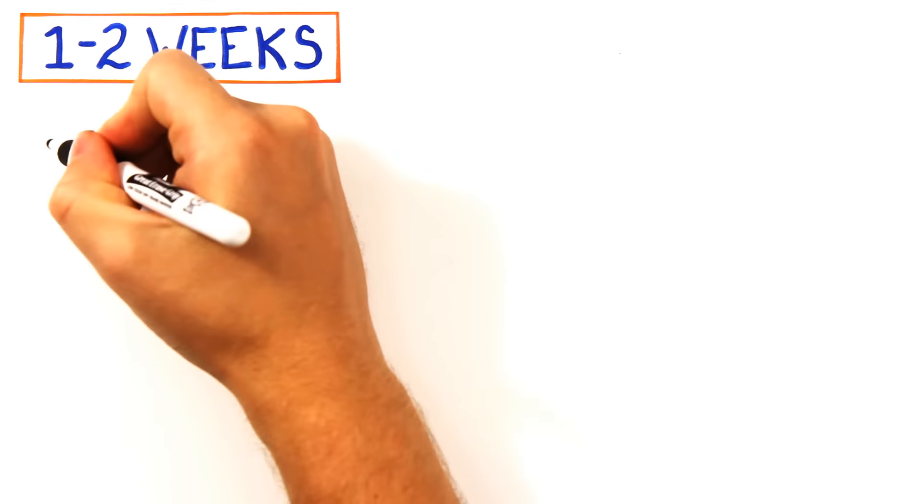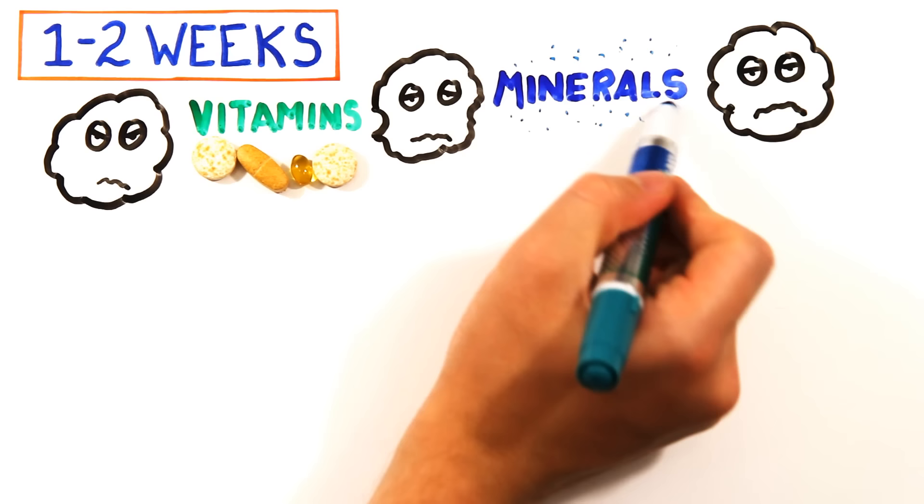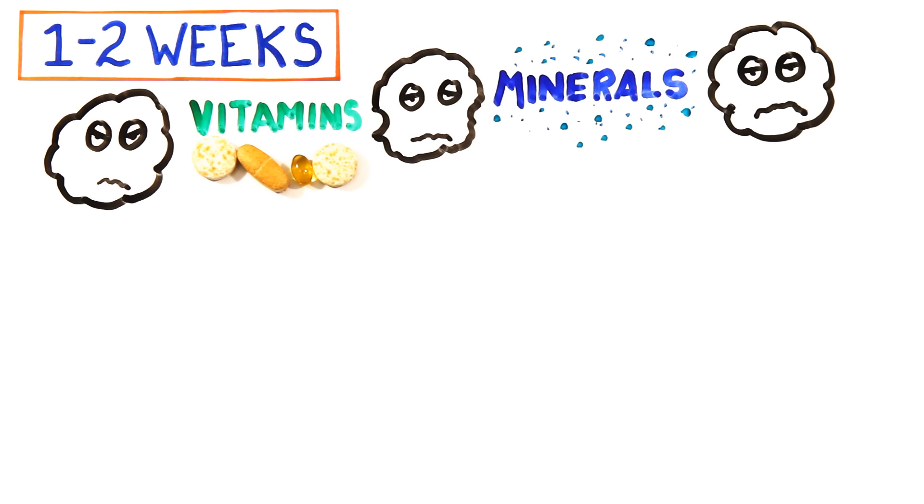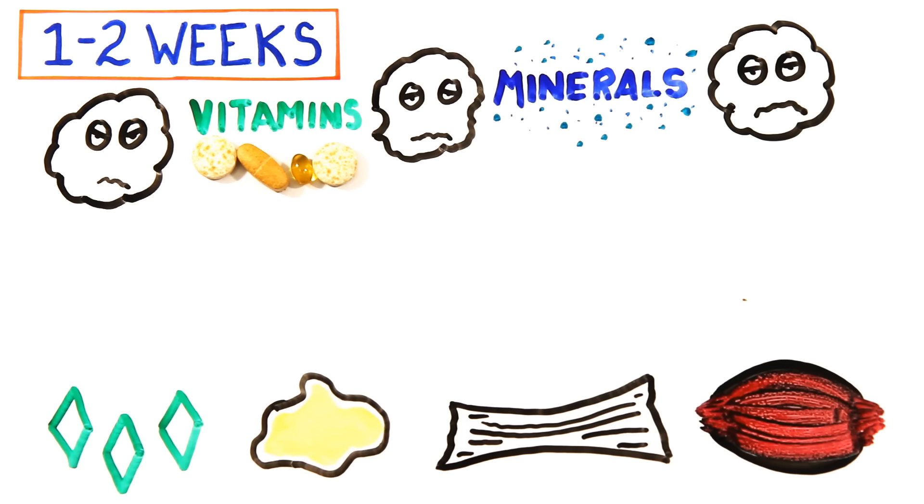Within a few weeks, the body's immune system will be so weakened without any vitamins or minerals that many will die from disease. Otherwise, it will continue to use up all energy sources until there is no glucose, fat, tissue, or muscle mass left.